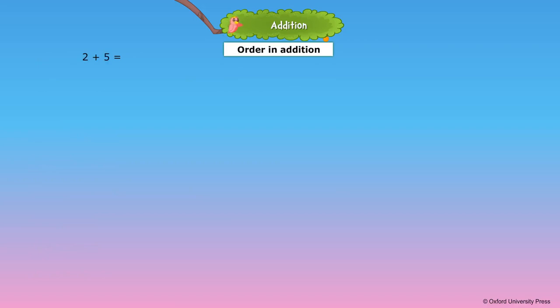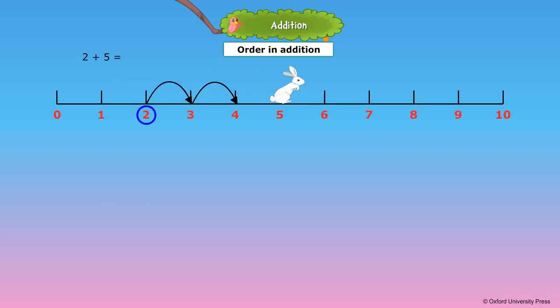Let us find 2 plus 5 using the number line. The bunny starts at 2 and jumps forward 5 times. The bunny reaches 7. 2 plus 5 is equal to 7.